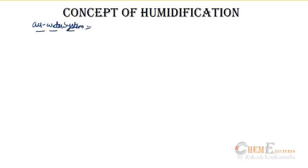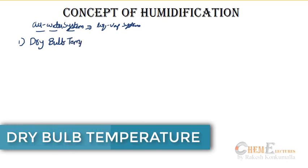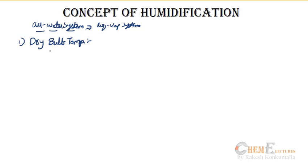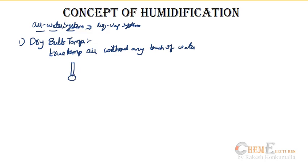I am generalizing it and you can take any liquid-vapor system. The first temperature I will be introducing is dry bulb temperature. Dry bulb temperature is the true temperature of air — if you take a thermometer kept in ambient air, the temperature measured is the dry bulb temperature. It is a very simple temperature which you get directly.